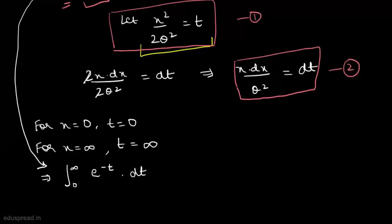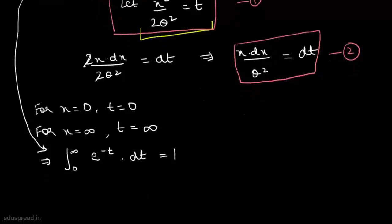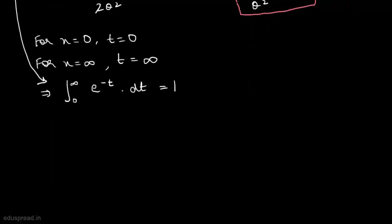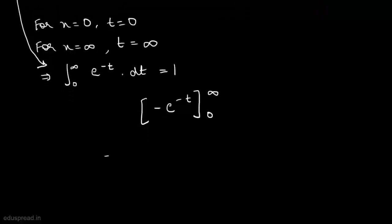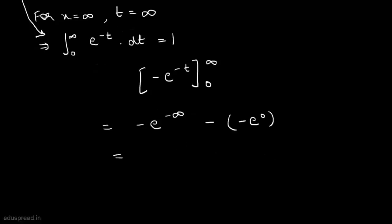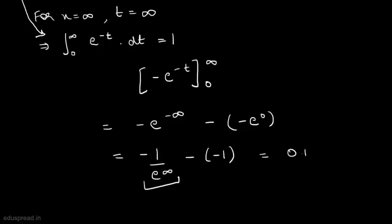Our problem now reduces to showing this equals 1. The integral of e raised to the power minus t is minus e raised to the power minus t, evaluated from 0 to infinity. This gives minus e raised to the power minus infinity minus minus e raised to the power 0, which equals 0 plus 1, equal to 1. This confirms the PDF is legitimate.